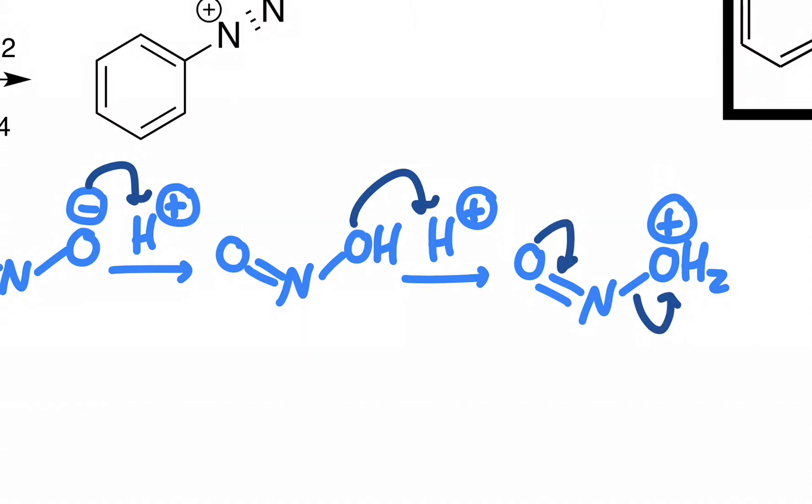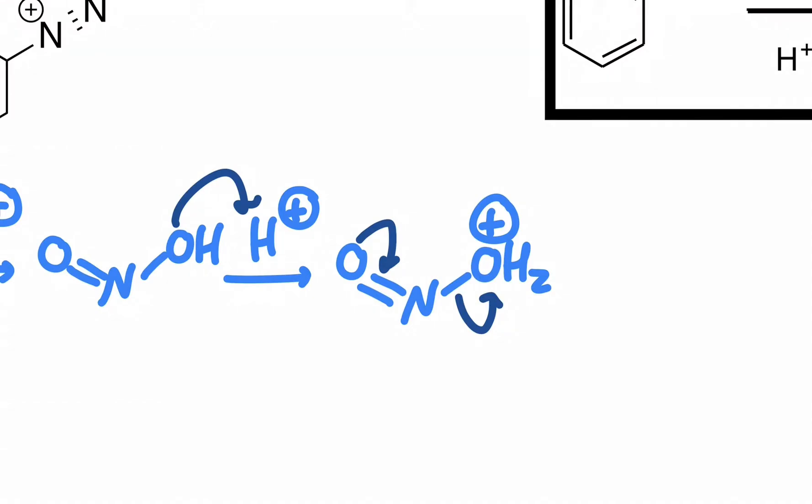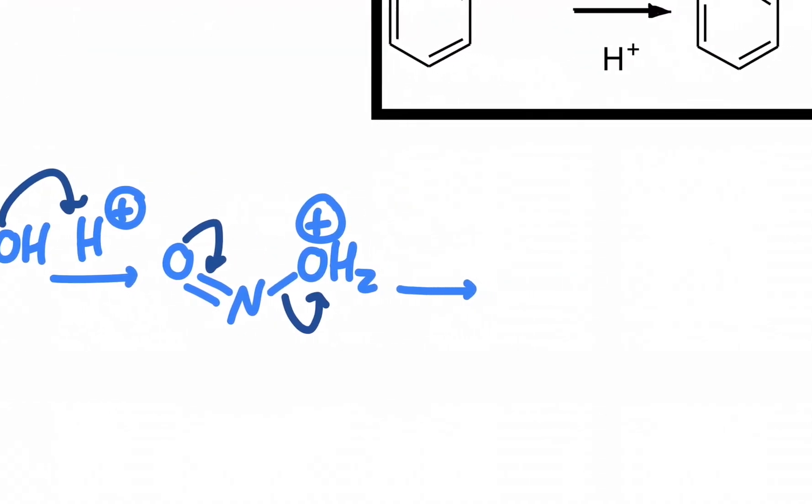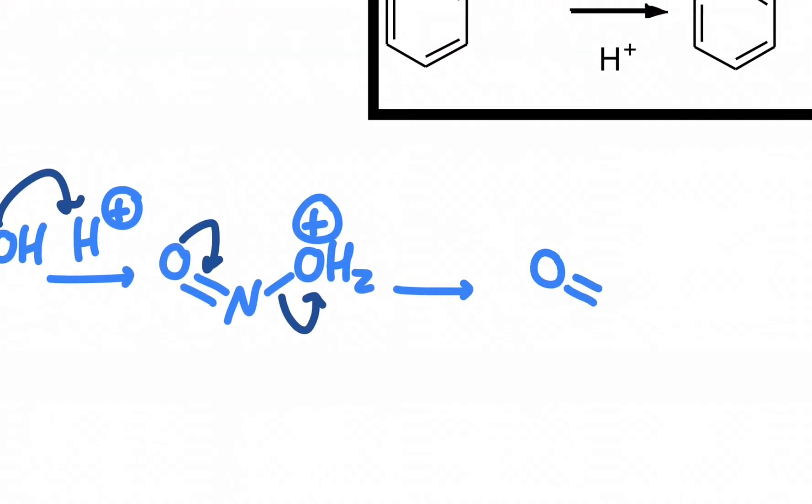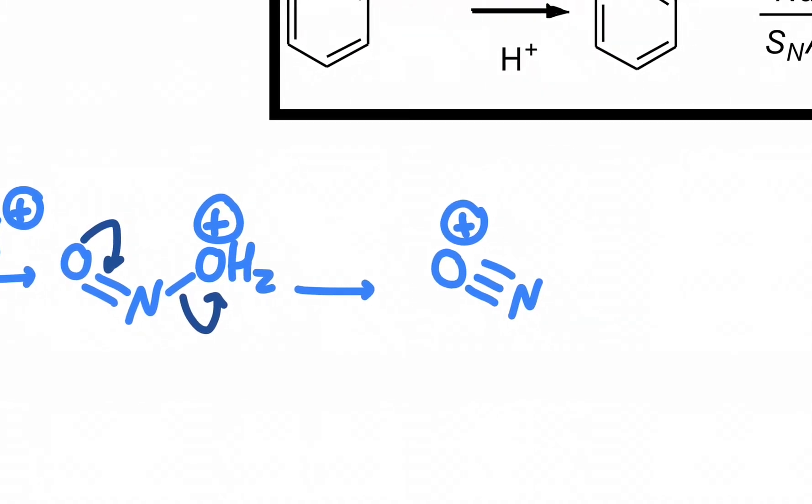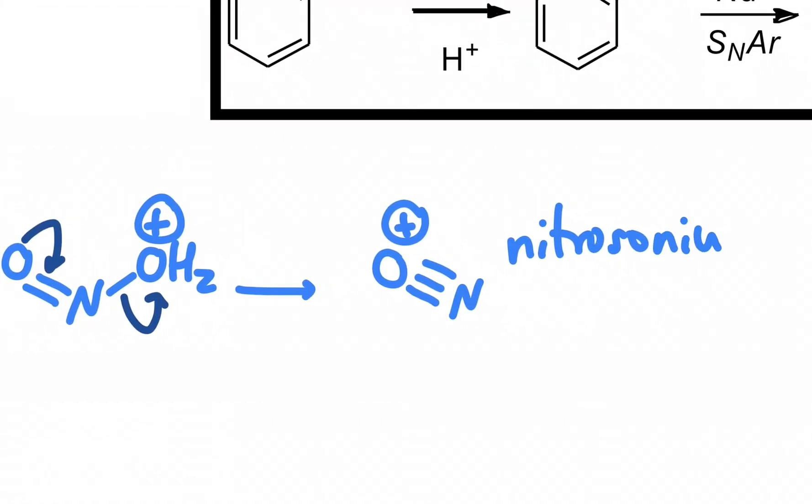You could even donate a lone pair from that oxygen. That's just a resonance arrow. And then you get a very little binary molecule called a nitrosonium ion. And that's just from the combination of those two reagents. That's the first part.